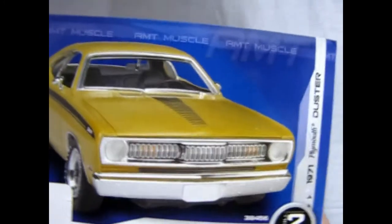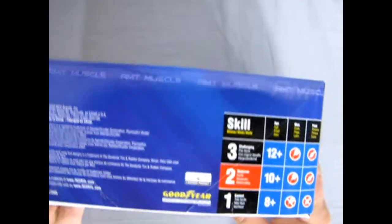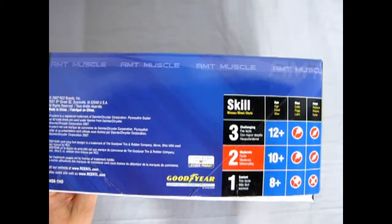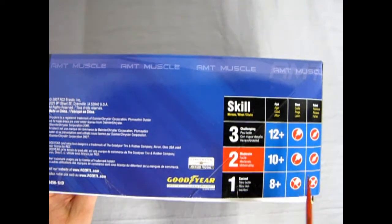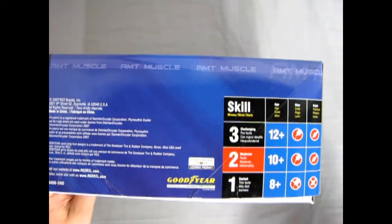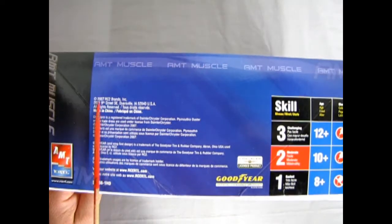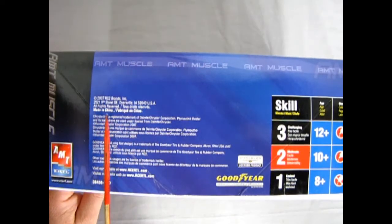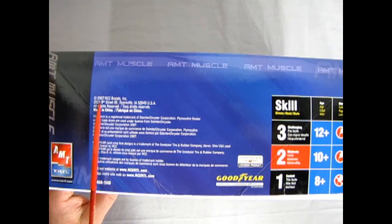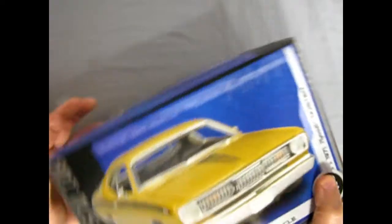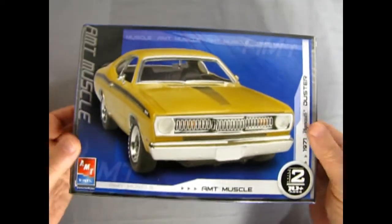Going back, we've got all the details here on this side. This is a skill level 2 kit for ages 10 and up. You need glue, you need paint. You're not going to get it in here. This release came from RC2 brands. It's a little bit later than the original. This came out in 2007. So turning it up and moving around, we can now take the lid off this baby.